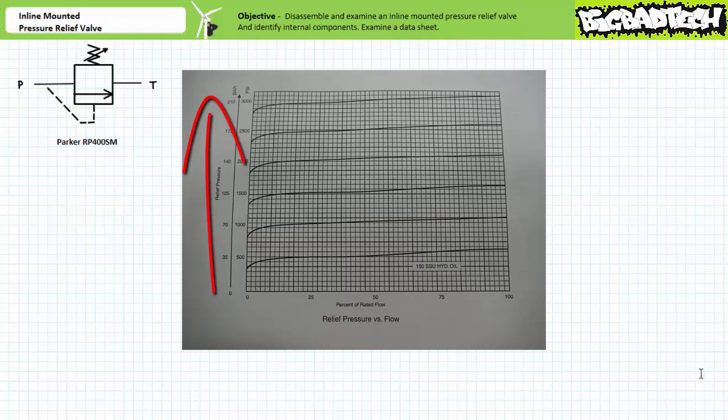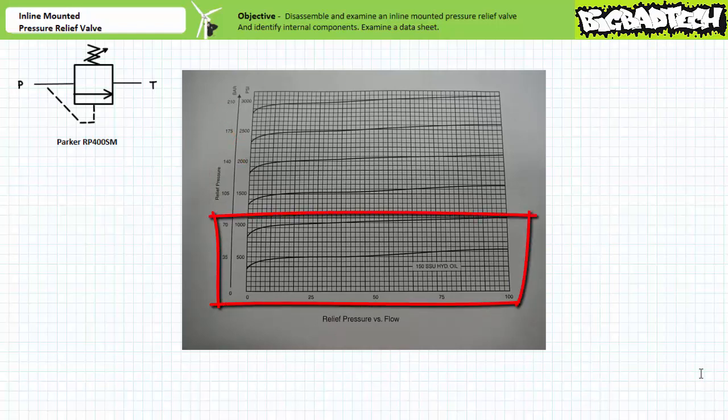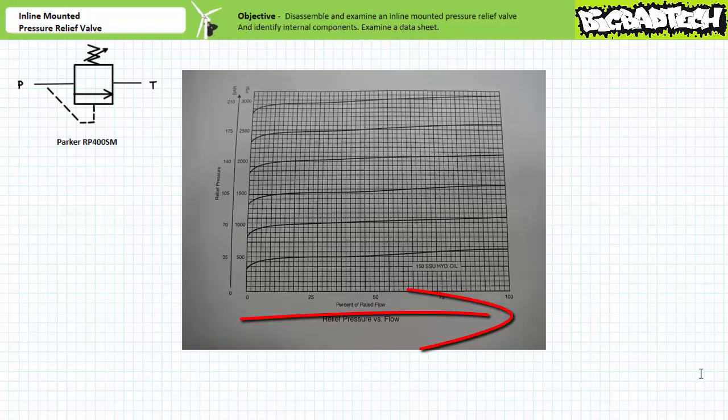The vertical scale is in units of bar and PSI. Given the pressure range of this valve is between 50 and 1000 PSI, we're obviously paying attention to the bottom region of this chart. The horizontal scale is percentage of rated flow. Given this particular valve is designed to accommodate a flow rate of up to 6 gallons per minute, 100% is 6 gallons per minute, 50% is 3 gallons per minute, and so on.